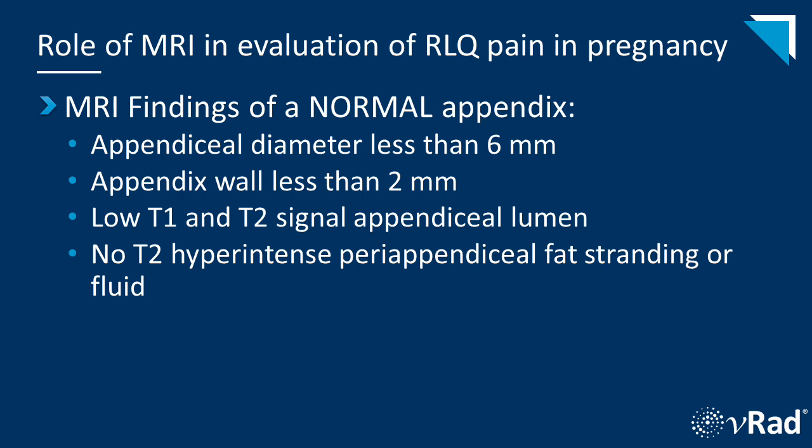The MRI findings of a normal appendix follow logically from what we know from CT. The diameter is less than 6mm, the wall is less than 2mm, there should be low T1 and T2 signal in the appendiceal lumen — usually air — and there should be no T2 hyperintense periappendiceal fat stranding or fluid. We're going to go through a couple of normal appendices on MRI, then a few abnormal appendices, to give you an idea of what these look like.